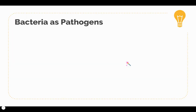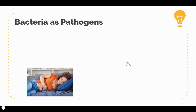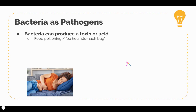In the immune system notes you learned the term pathogens, referring to any agent that causes disease. Viruses fall in this category, and bacteria that cause disease are also considered pathogens. There are two ways bacteria can cause disease. One is by producing a toxin or an acid — an example of this is food poisoning or the 24-hour stomach bug. The bacteria releases a toxin and the immune system's response is to eliminate it quickly, commonly causing vomiting, cramps, or diarrhea.